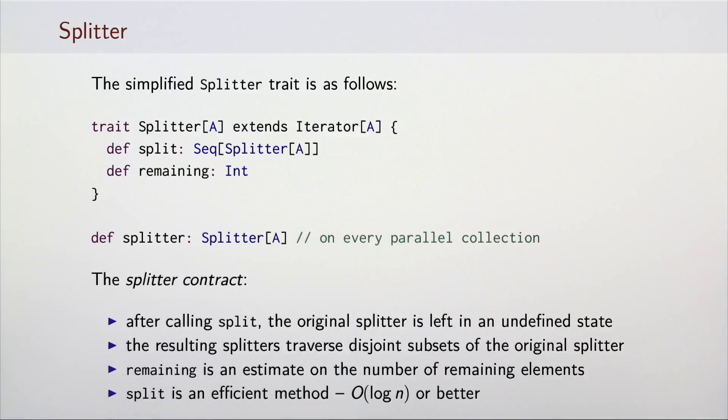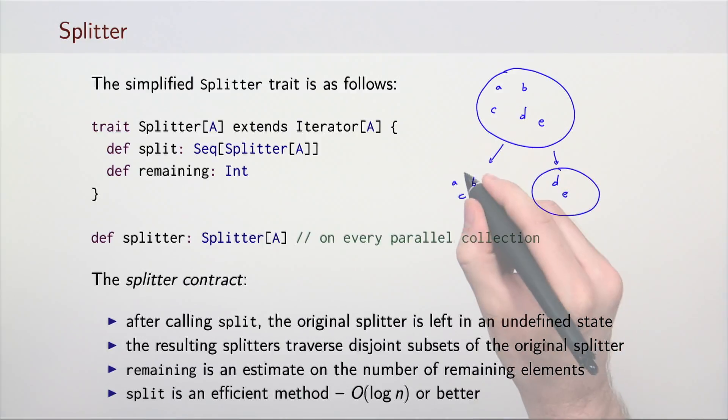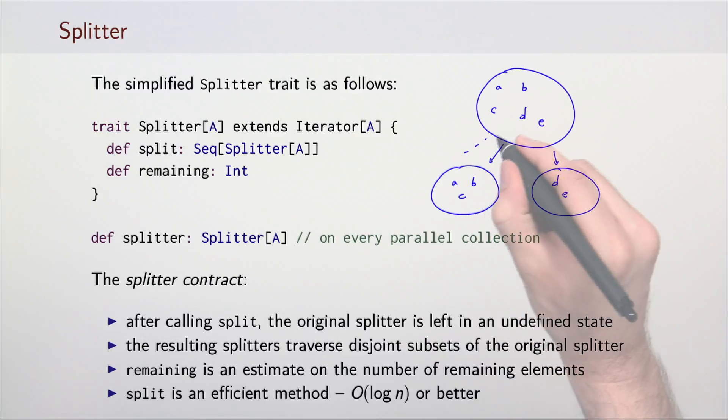Then, the resulting splitters traverse disjoint sets of the original splitter. For example, if the splitter contains elements a, b, c, d, and e, then the resulting splitters could, for example, traverse elements a, b, and c, and elements d and e.